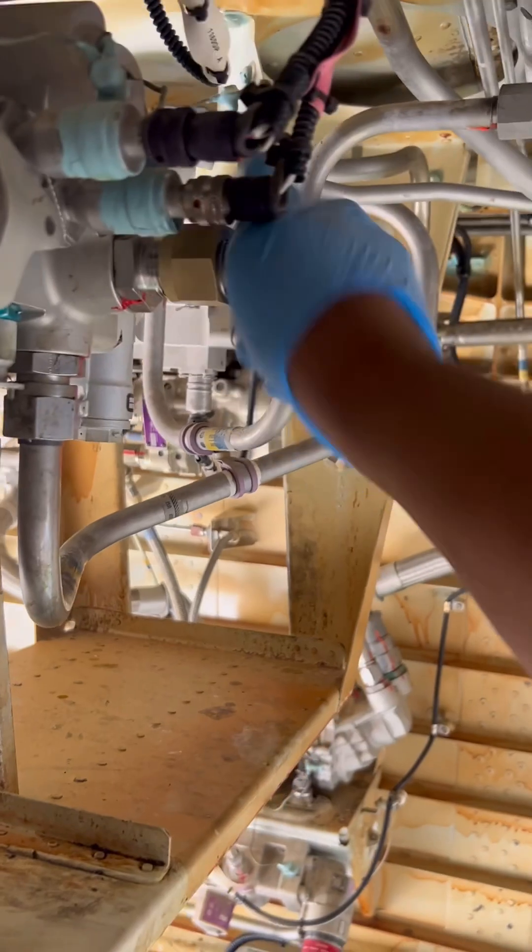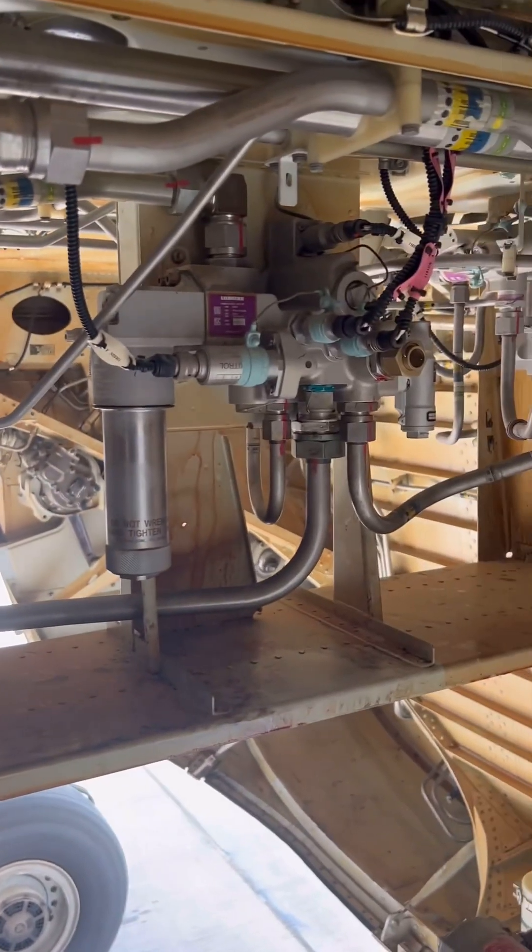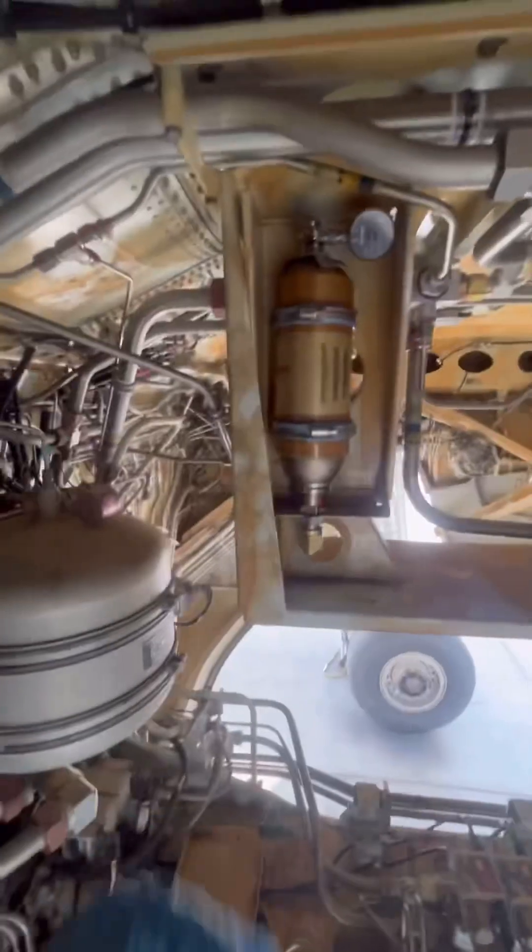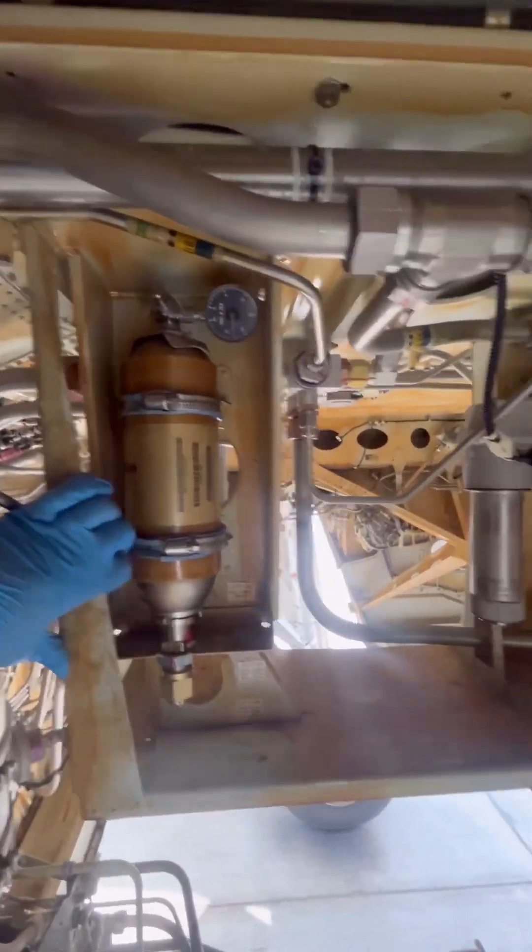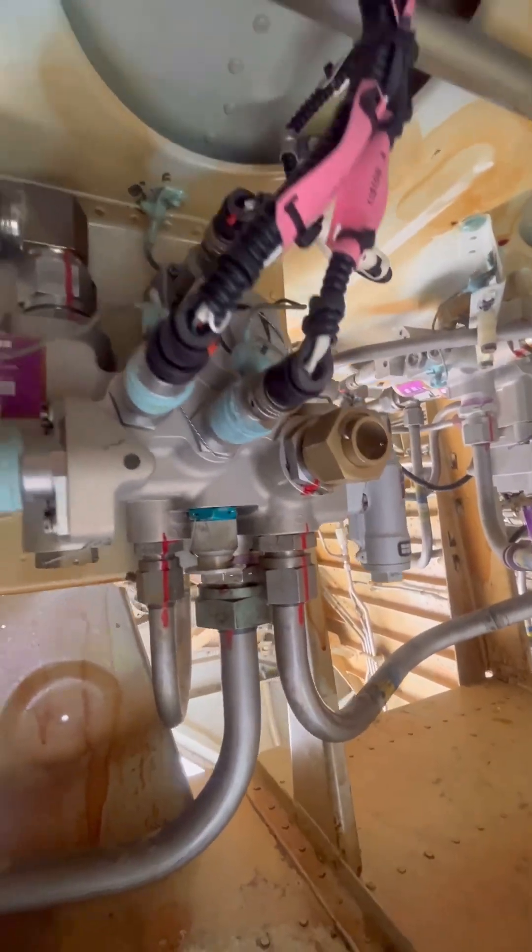Once we install it, we torque it with a proper torque wrench. We also install the other blanking plug on the accumulator end. It's very important to properly torque these blanking plugs because any leak from them can lead to loss of the entire green system hydraulic.